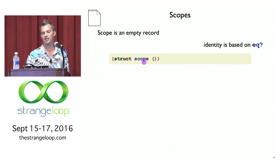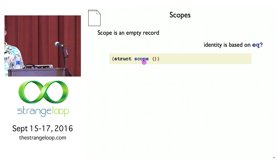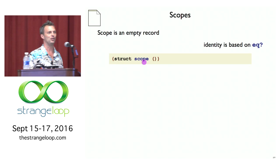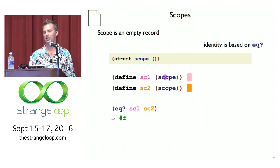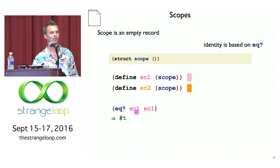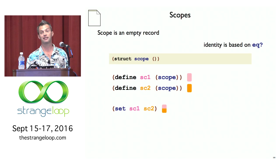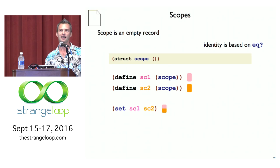We represent scopes as a record, this time opaque. In principle we need to make up a new color every time we make a scope, but I'll let the memory manager do that — it picks an address in memory to be the color, so I'll use eq? to distinguish different colors. SC1 and SC2, by creating separate scope records, are separate scopes — not equal to each other — but SC1 is of course equal to SC1. Scope sets are just these things put into a regular set.